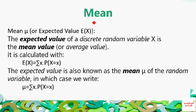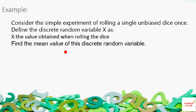Next is the mean. The mean, denoted E(x) or μ, is calculated using the formula E(x) = Σ x · P(x). You multiply each x value by its corresponding probability and sum them all up. That total sum is the mean.